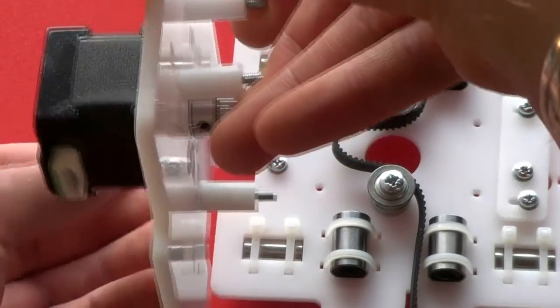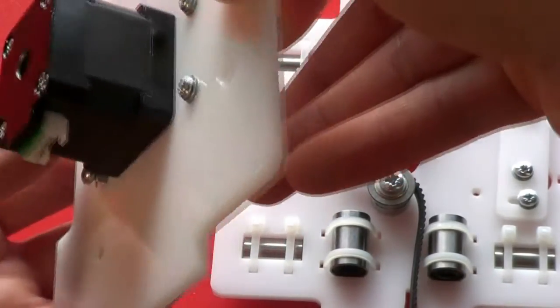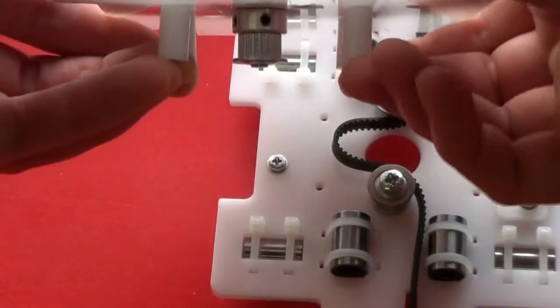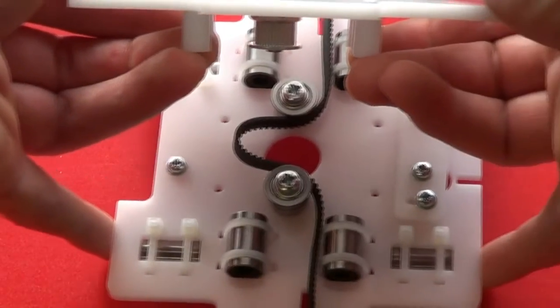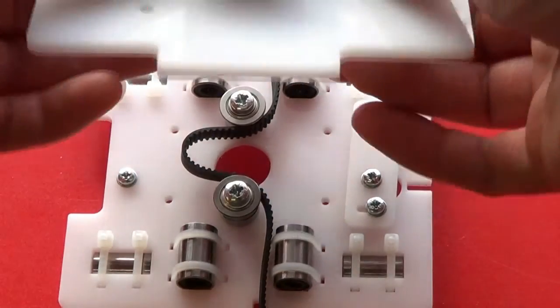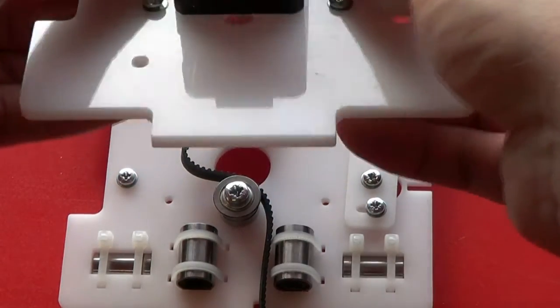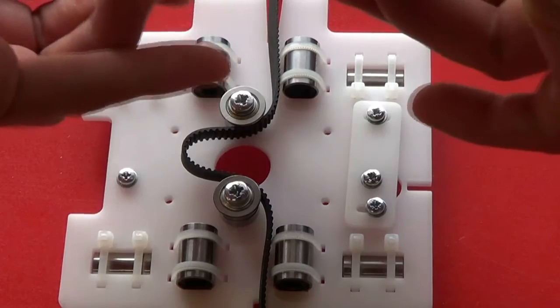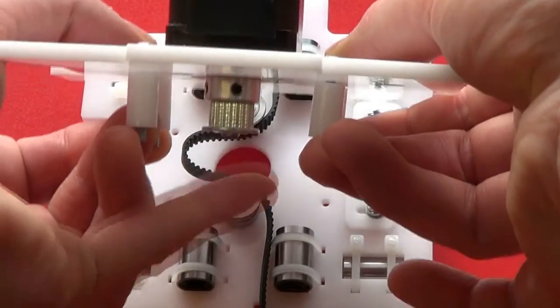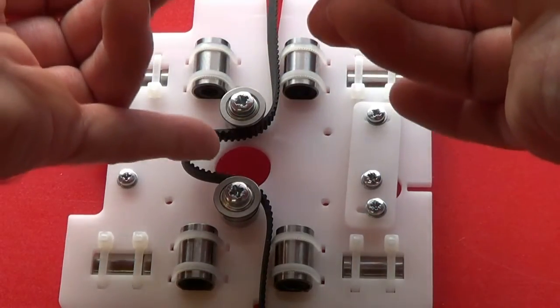Then, while holding the spacers to ensure they don't fall off, this is the tricky part, place the top carriage plate onto the bottom one, ensuring that the motor pulley goes into the loop of the belt.